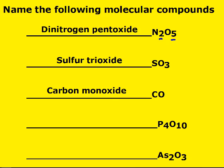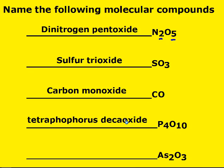Go ahead and pause the video and do the next two on your own, then restart when you're done. Four phosphoruses and ten oxygens should have been tetraphosphorus decaoxide. And then the last one: two arsenics and three oxygens — diarsenic trioxide.